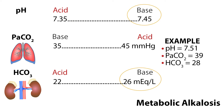In our next example, the pH is 7.51, so it is basic. The PaCO2 is 39, within normal range. The bicarb level is above 26, so it is high, also basic. This means we have metabolic alkalosis. Metabolic alkalosis can result from inadequate excretion of acids due to renal disease, loss of potassium from diuretic therapy, and other causes.